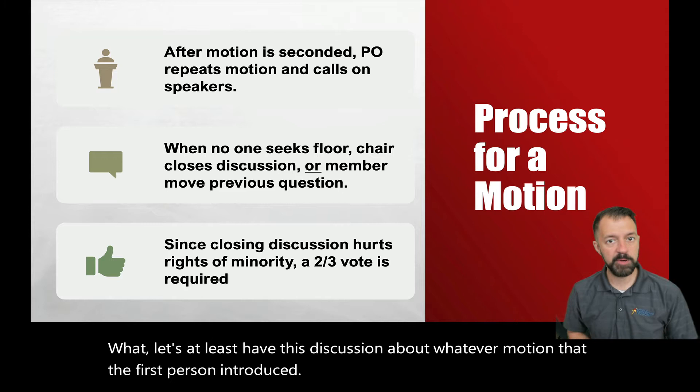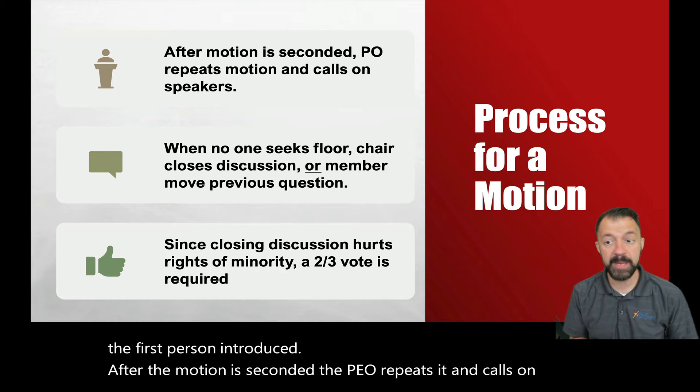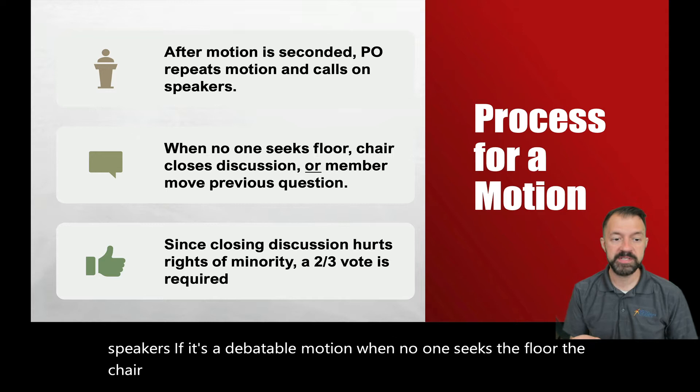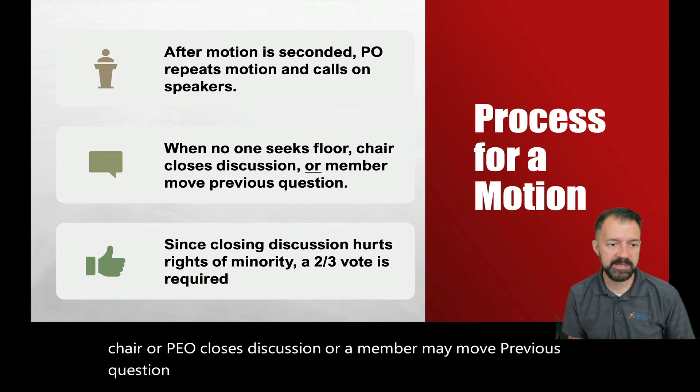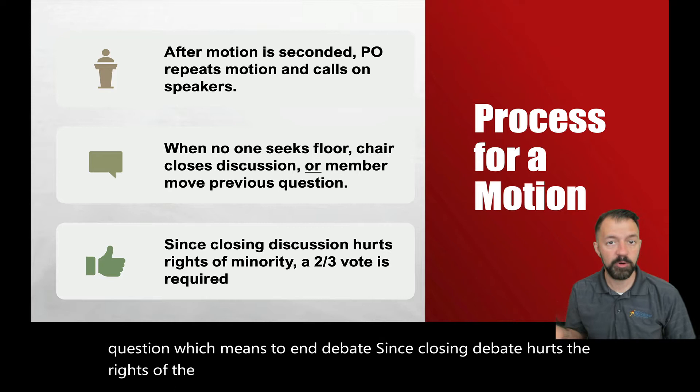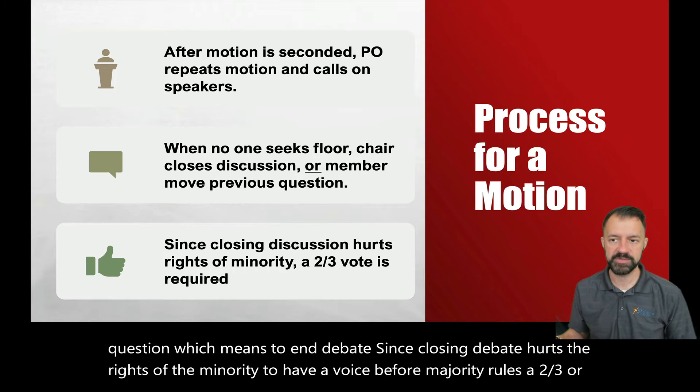After the motion is seconded, the PO repeats it and calls on speakers if it's a debatable motion. When no one seeks the floor, the chair or PO closes discussion, or a member may move previous question, which means to end debate. Since closing debate hurts the rights of the minority to have a voice before majority rules, a two-thirds or supermajority vote is required first.